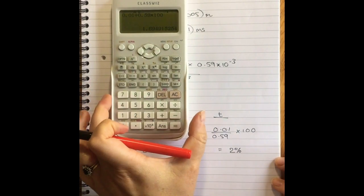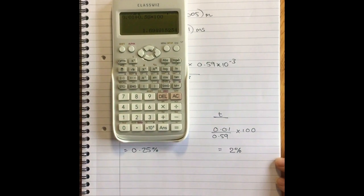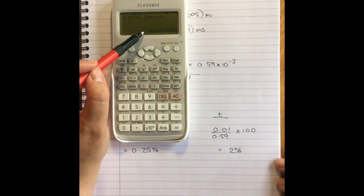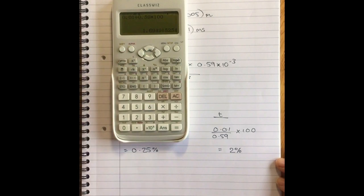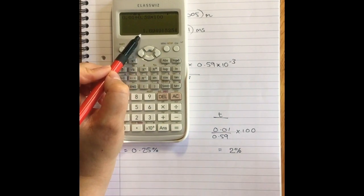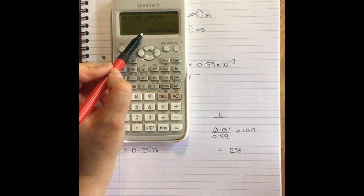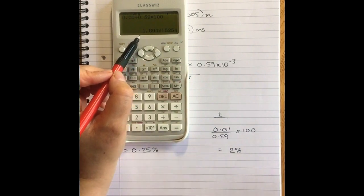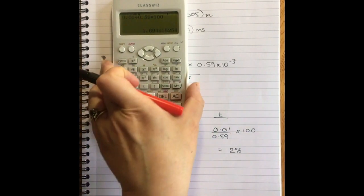Remember, a single sig fig for your uncertainties. So my actual number here is 1.69491 blah, blah, blah, blah. But I can only have a single digit for my uncertainty. If my first digit is a number, I can only have a single digit. So 2%.